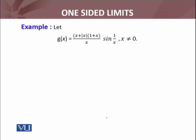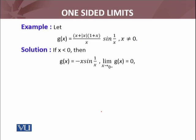Let's consider another example. g(x) is defined as (x + |x|)(1 + x/x)·sin(1/x) for x ≠ 0. At x = 0, g(x) is undefined. We will discuss the left-sided limit: lim_{x → 0⁻} g(x), and also the right-sided limit: lim_{x → 0⁺} g(x).